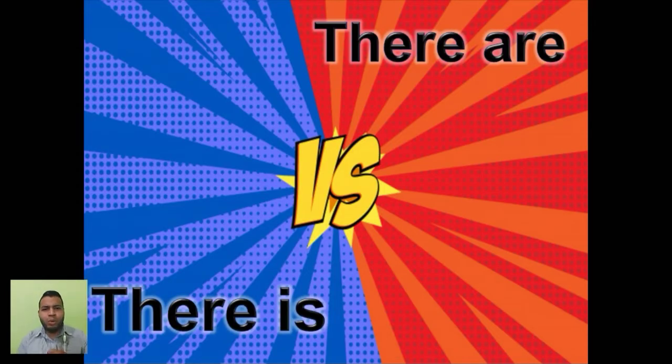As I told you before guys, today we are going to study the difference between there is and there are. Sepan ustedes que ambas estructuras significan hay. Hay un gato, hay un perro, hay muchos niños. Pero ¿cuál es la diferencia? Si ambas significan hay, ¿cuál es la diferencia? There is will be used for singular and there are will be used for plural. Let's see the examples.